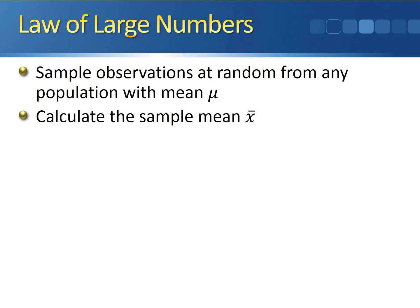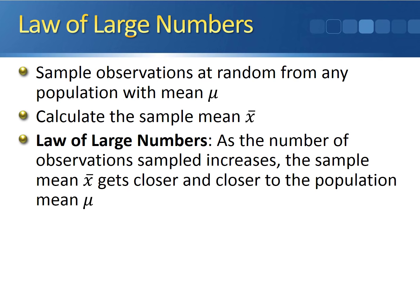The law of large numbers says: as the number of observations sampled increases, the sample mean x-bar gets closer and closer to the true population mean mu. Intuitively, this makes sense. As you increase your sample size, you're sampling a larger part of the population and gathering more information. So as you have more and more information, you would expect x-bar to get closer to the true population mean.